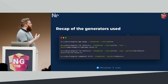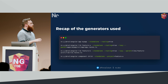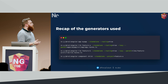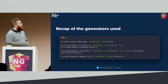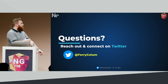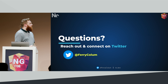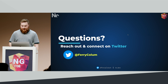So that's a quick recap of the generators we used: the app generator, the library generator, and the component generator. Only three generators, but based on the flags we passed, we were able to quickly scaffold out multiple features using standalone, taking the best advantage of all the new standalone features that Angular has offered. If you have any questions, you can reach out to me on Twitter — my handle is FerryColumn — or you can find me afterwards. Thank you.